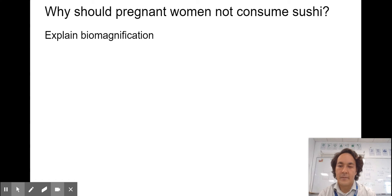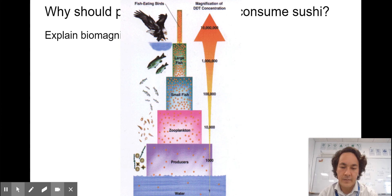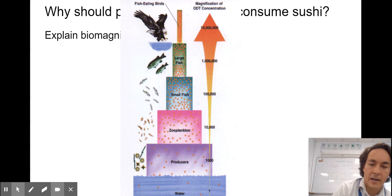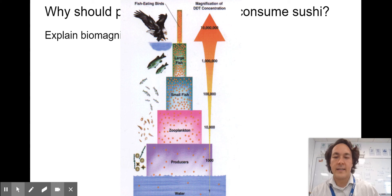Why should pregnant women not consume sushi? Can you explain biomagnification? Biomagnification is how when a toxin is in the water, such as DDT, which Rachel Carson wrote about, or mercury, it's then picked up by producers. These producers are eaten by primary consumers, which are eaten by fish, which are eaten by larger fish. The problem is that these toxins cannot be broken down. They tend to reside in the fat tissues or liver tissues. They start to bioaccumulate as you go up the food chain.